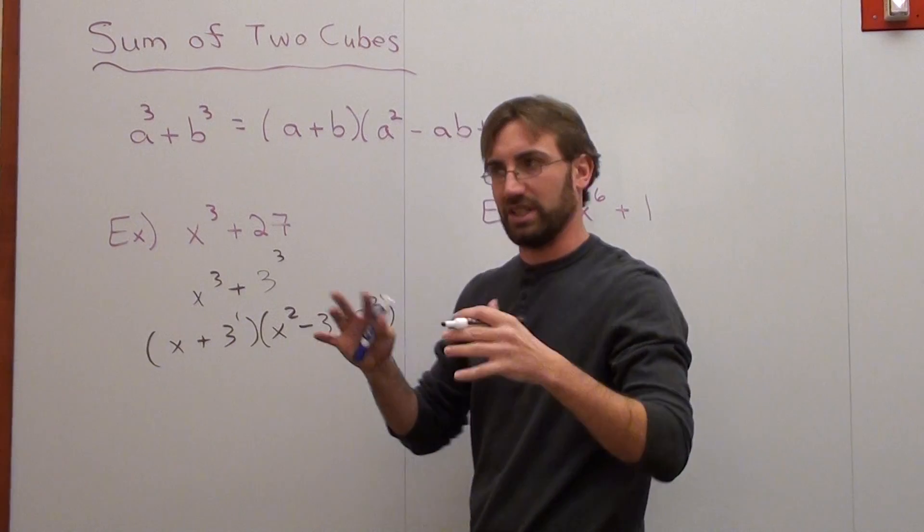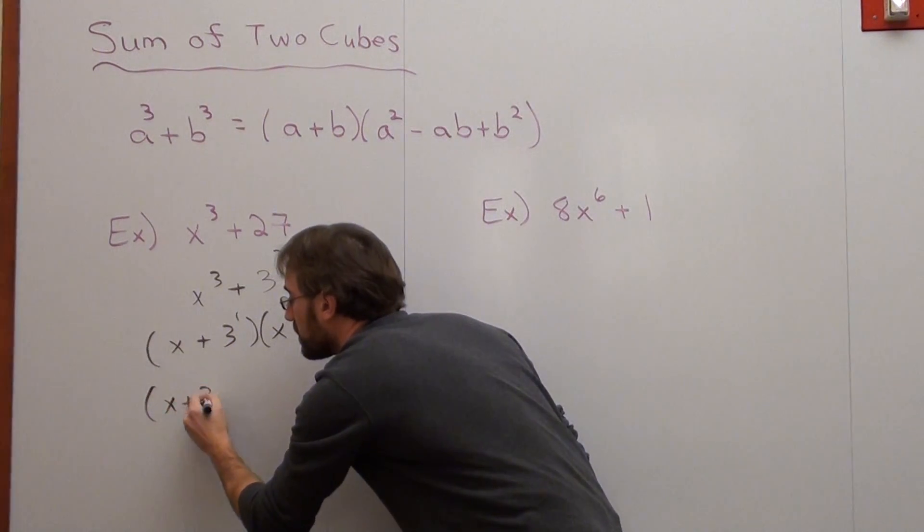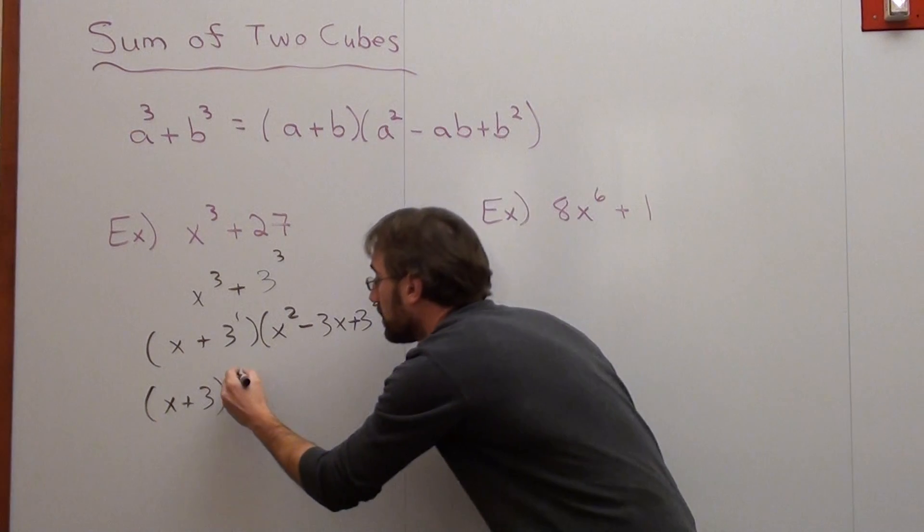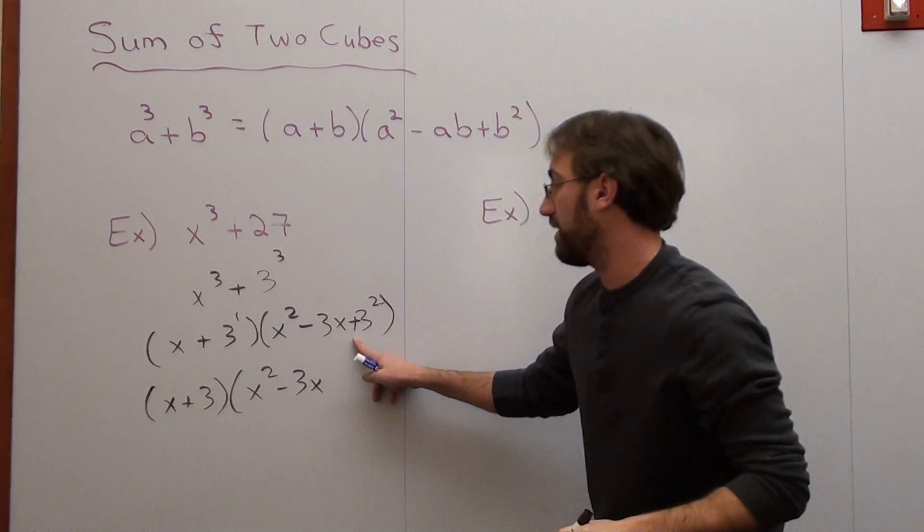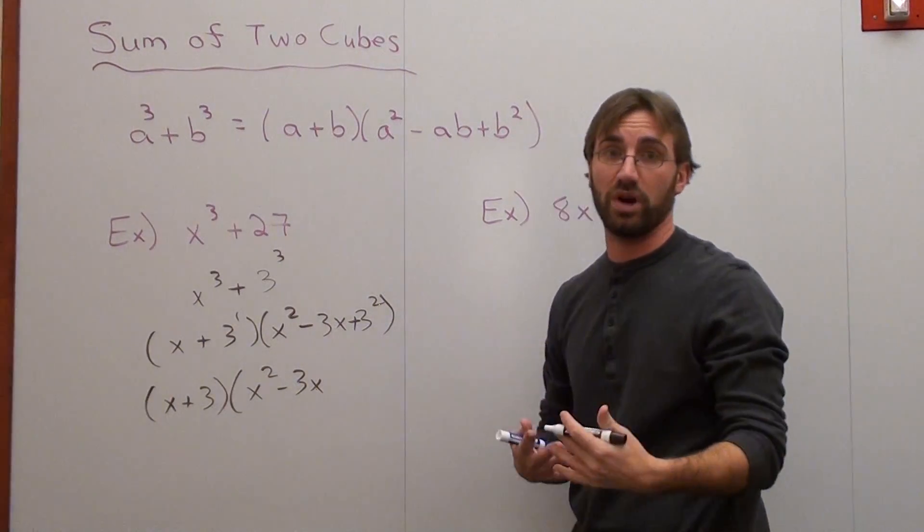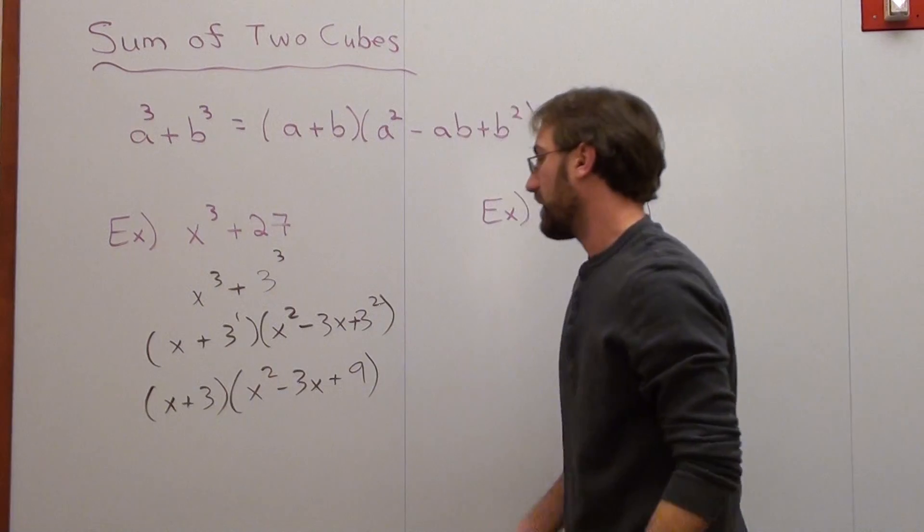So when I want to simplify it, because I actually do have to do a little bit of simplification, it's (x + 3)(x² - 3x), and then plus 3². You don't leave it as 3². You make it 9. And there you go. Can't factor anymore.